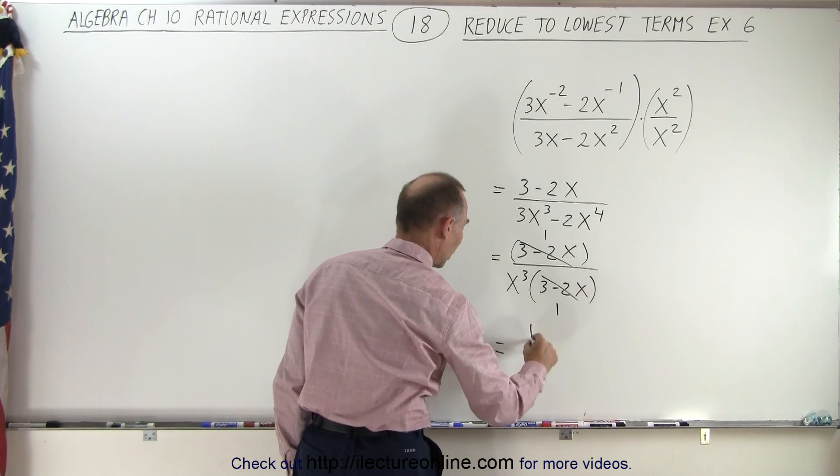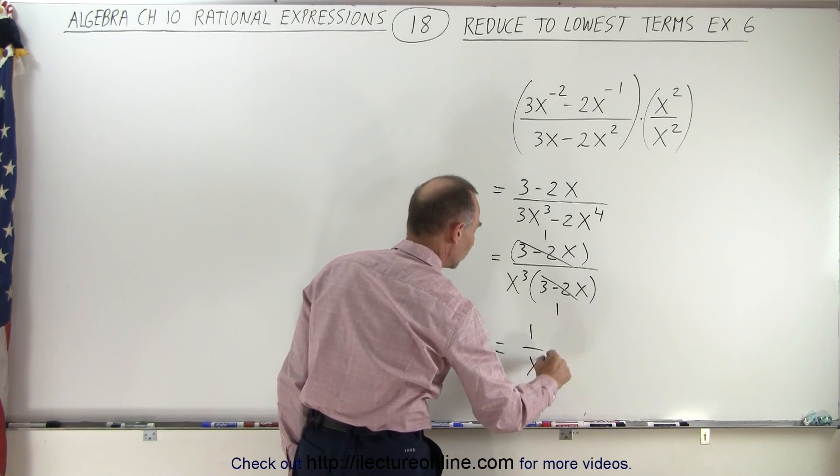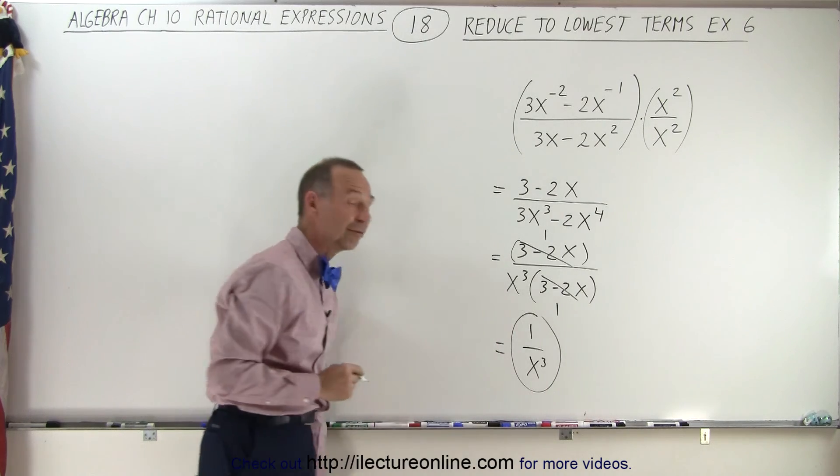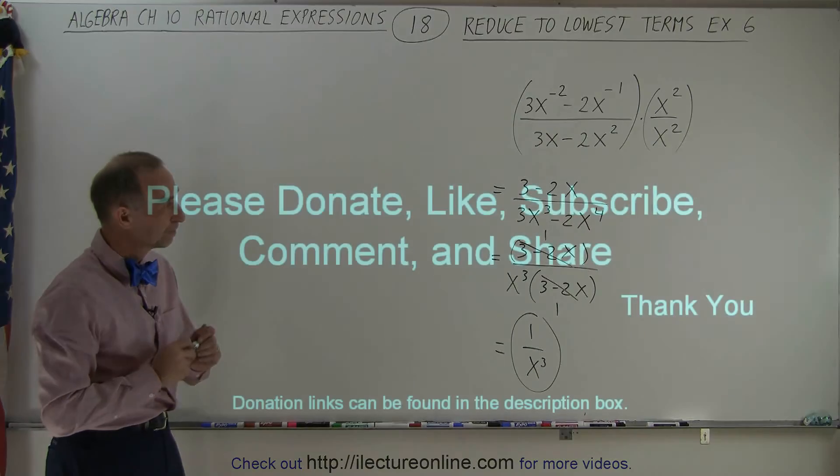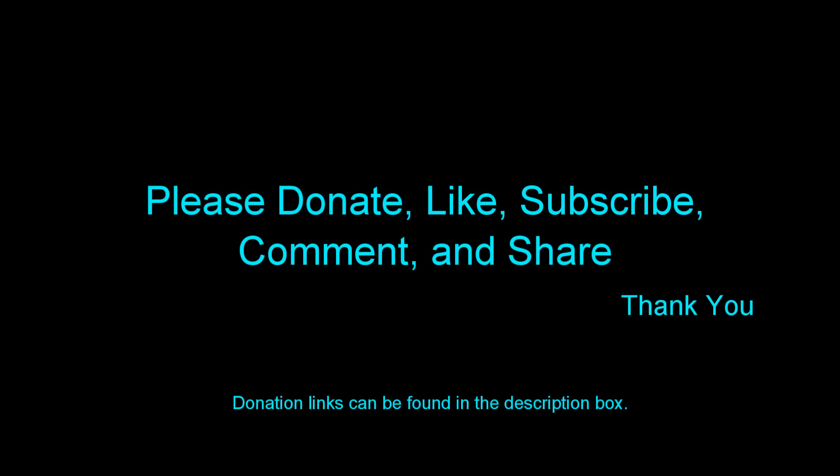And so therefore we're left with 1 over x cubed as the final simplified form. And that is how that's done.